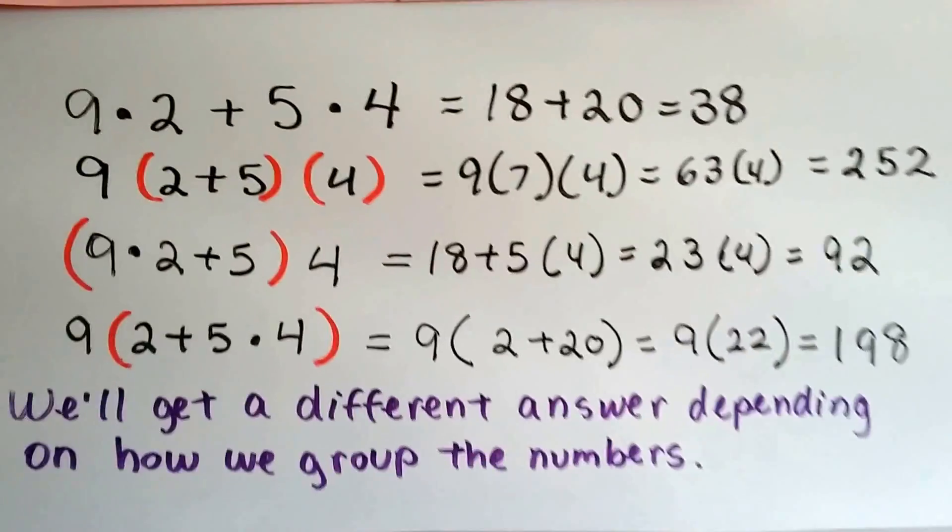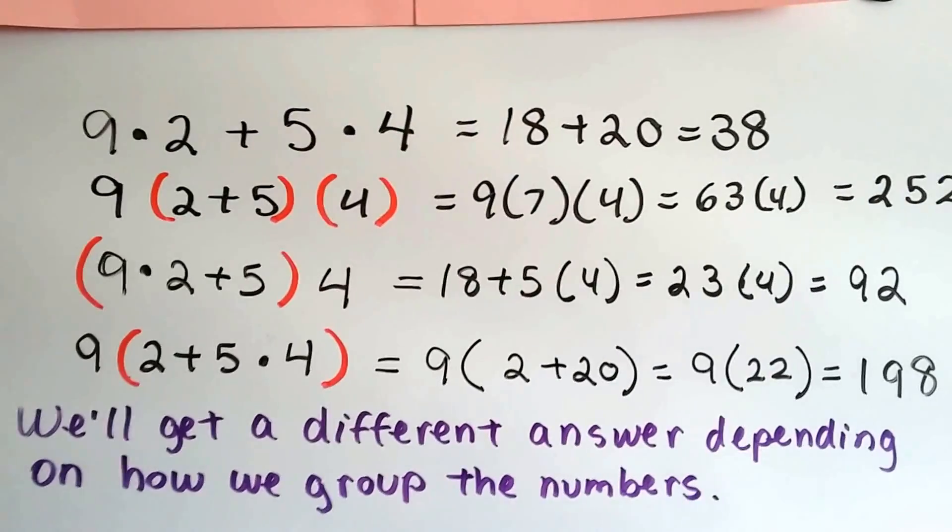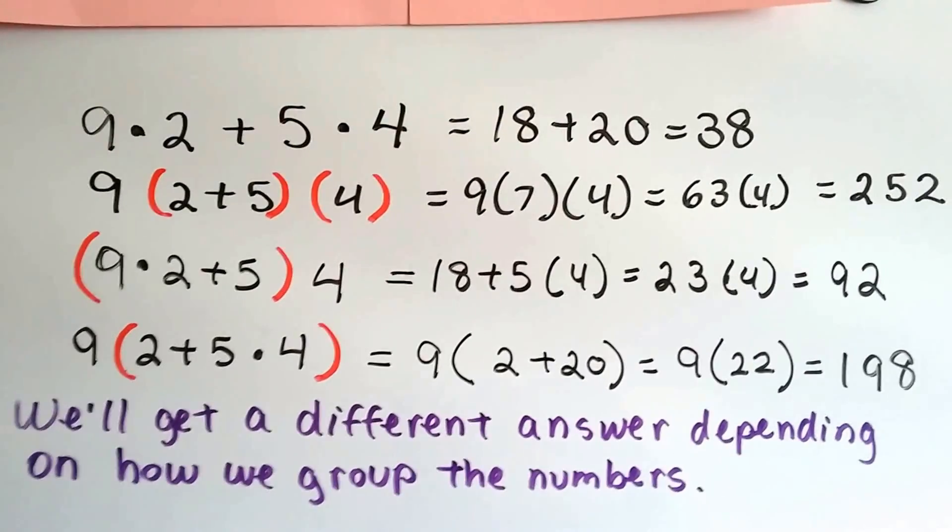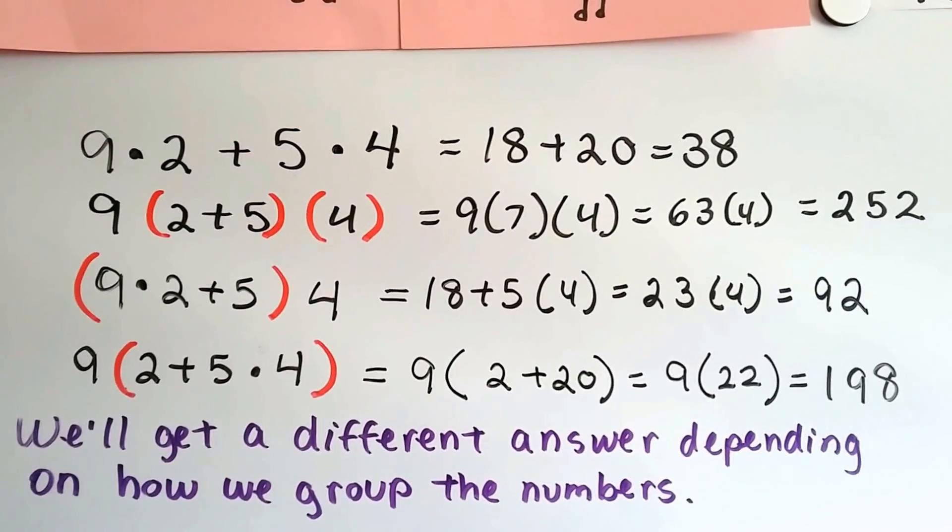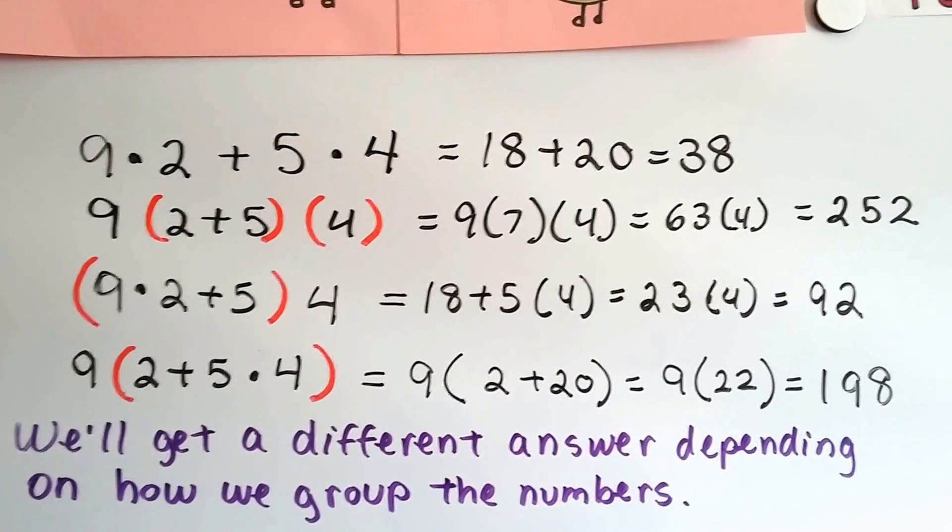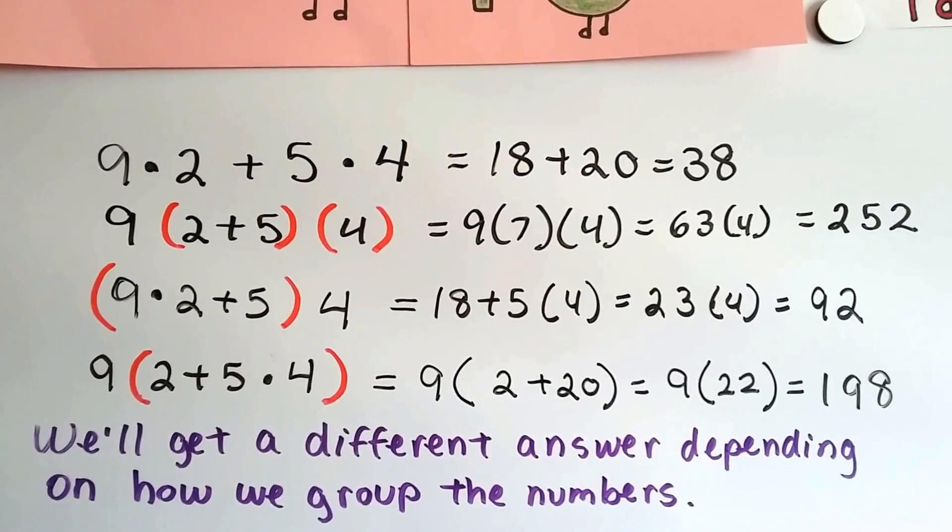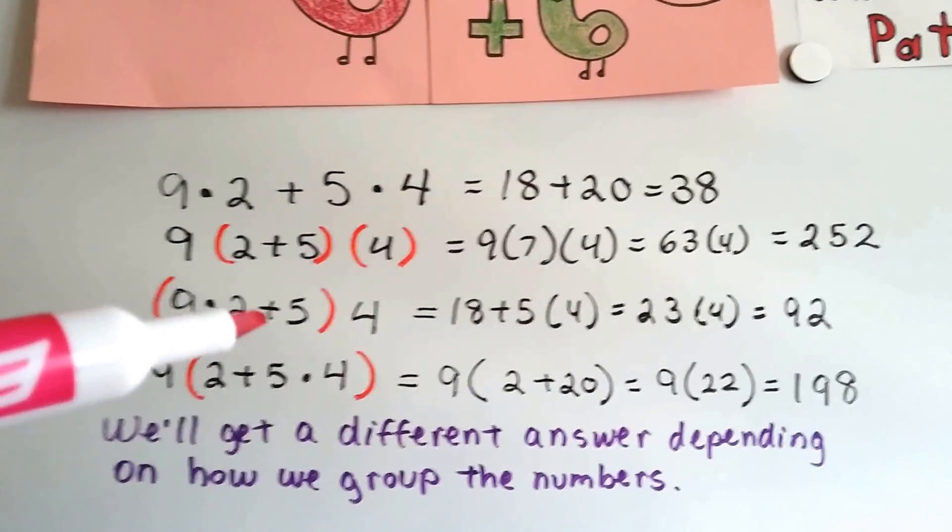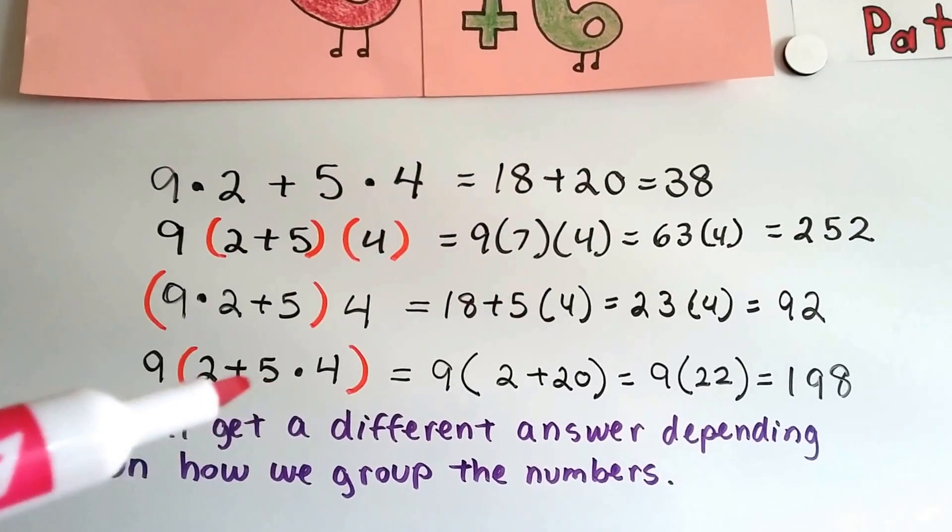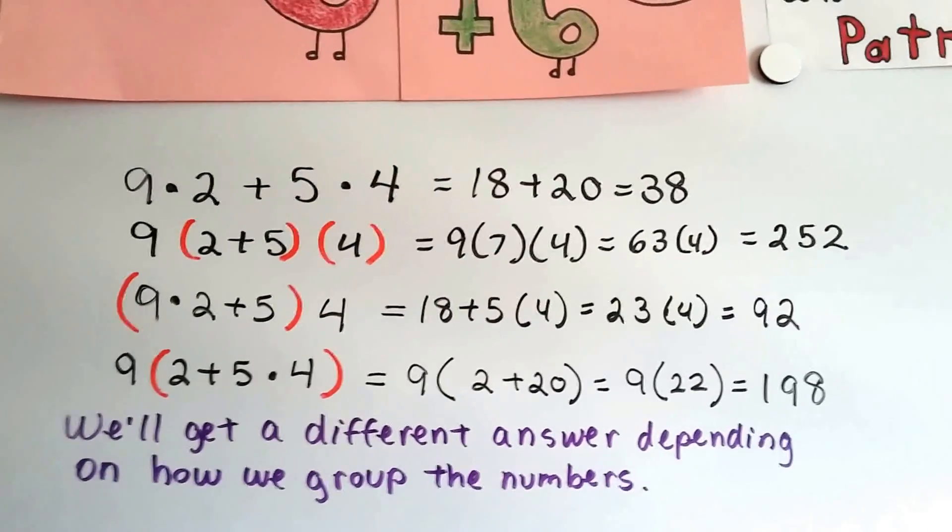Now take a look at this. We've got 9 times 2 plus 5 times 4. Order of operations says we have to do the 9 times 2, which is 18, and then we add the 5 times 4, which is 20. 18 and 20 is 38. But if we put grouping symbols differently around the 2 and the 5 and the 4 in this one, and then around the 9 times 2 plus 5 in this one, and then around the 2 plus 5 times 4 in this one, look what we get.